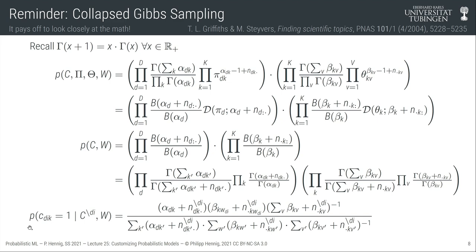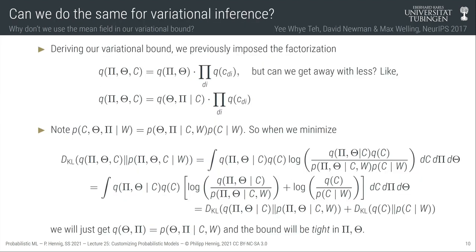Now that we've seen variational inference — where the bound was constructed over all three sets of variables theta, pi, and c — you might wonder: which is the better algorithm? For Gibbs sampling we can do collapsed inference, and variational inference is an optimization method. Interestingly, it turns out it's actually possible to do collapsed inference in a variational scheme as well, and I'd like to present how this is done over the next 15 minutes.